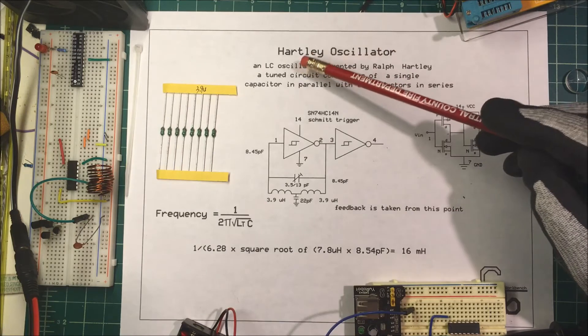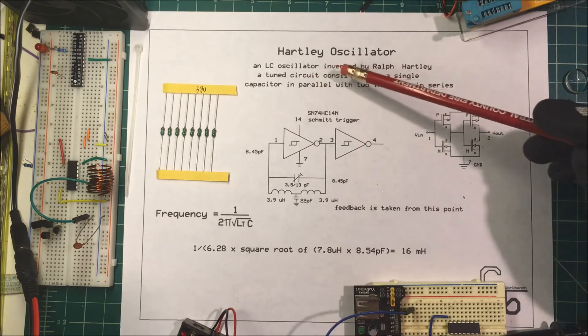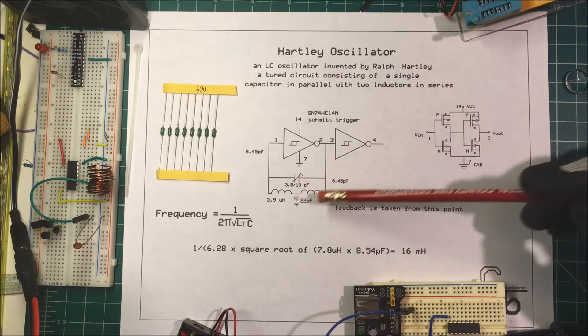Let's talk about the Hartley Oscillator. It's an LC oscillator invented by Ralph Hartley back in 1920, and it's a tuned circuit consisting of a single capacitor in parallel with two inductors in series, or one inductor has been center tapped.